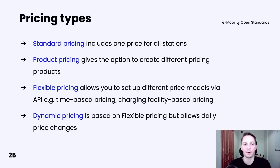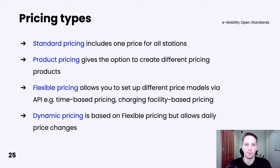Then we have pricing products, which allow us to create multiple pricing products for a station. For example, we may have different pricing per sub-CPO or different pricing per charging speed. Then we have flexible pricing, which is a more complex version of pricing products. It allows us to create a set of complex business rules for pricing. For example, we may define different pricing per EVSE, per location, per time, or a combination of all the above.